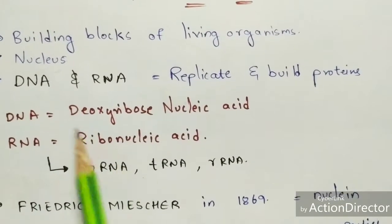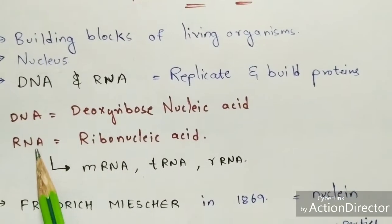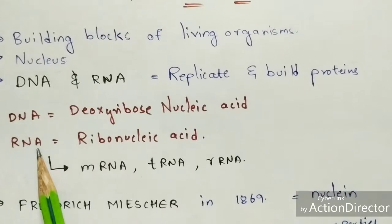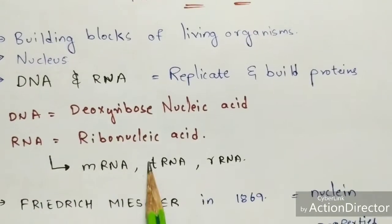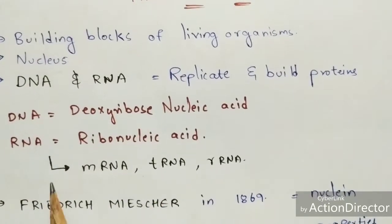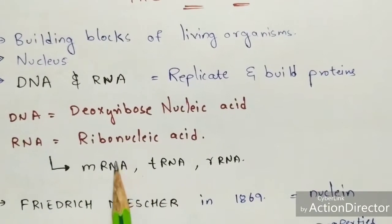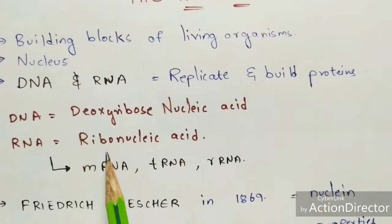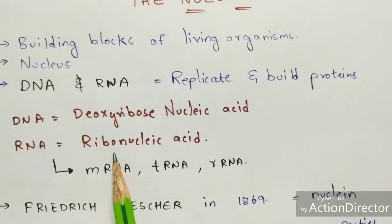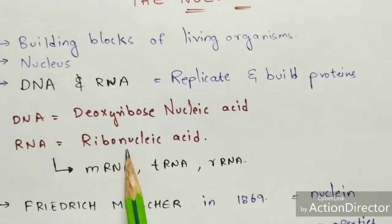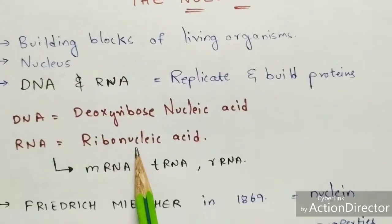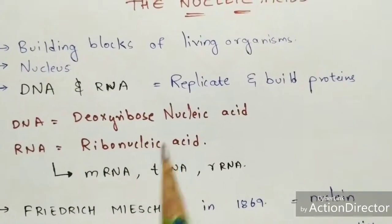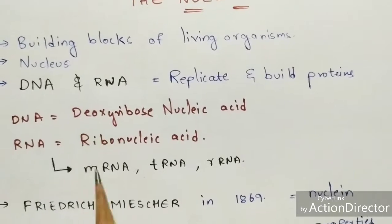Coming to the types of RNA, there are three types: mRNA, tRNA, and rRNA. The types of RNA have been explained in my previous video — the link will be given in the description box below.